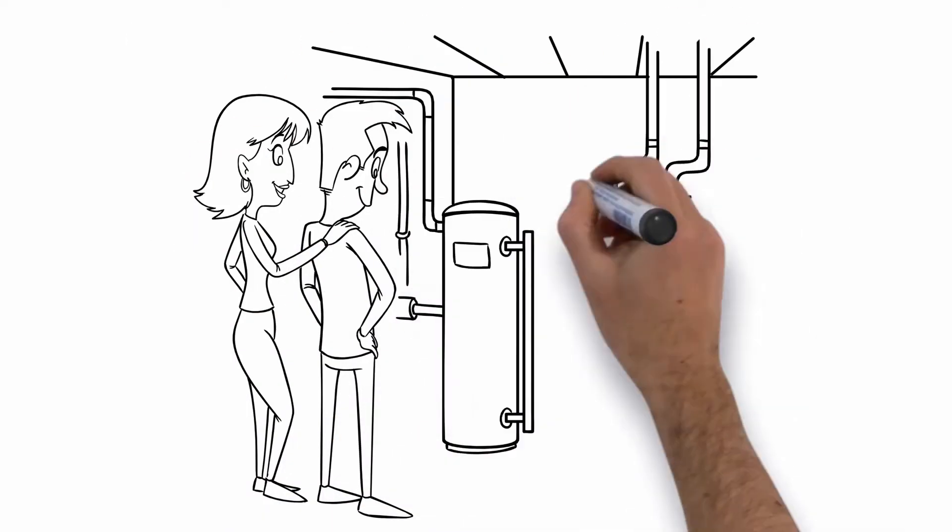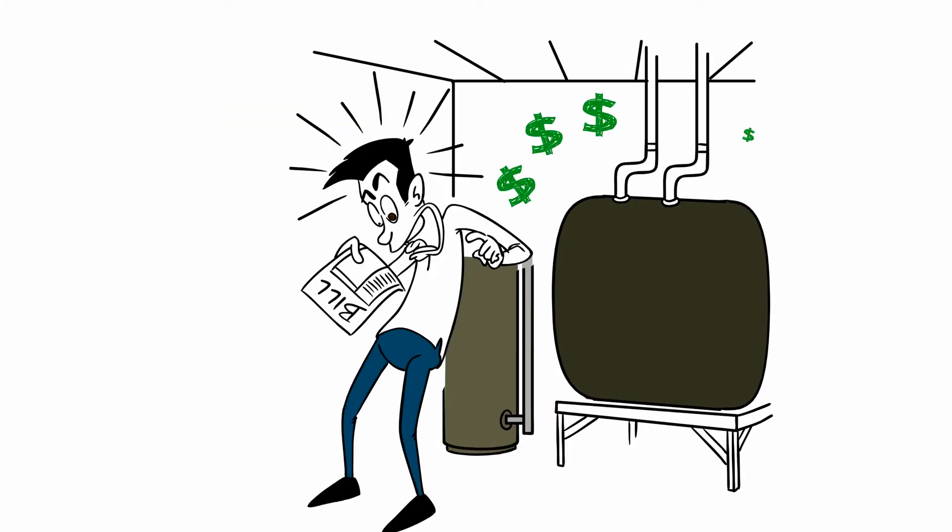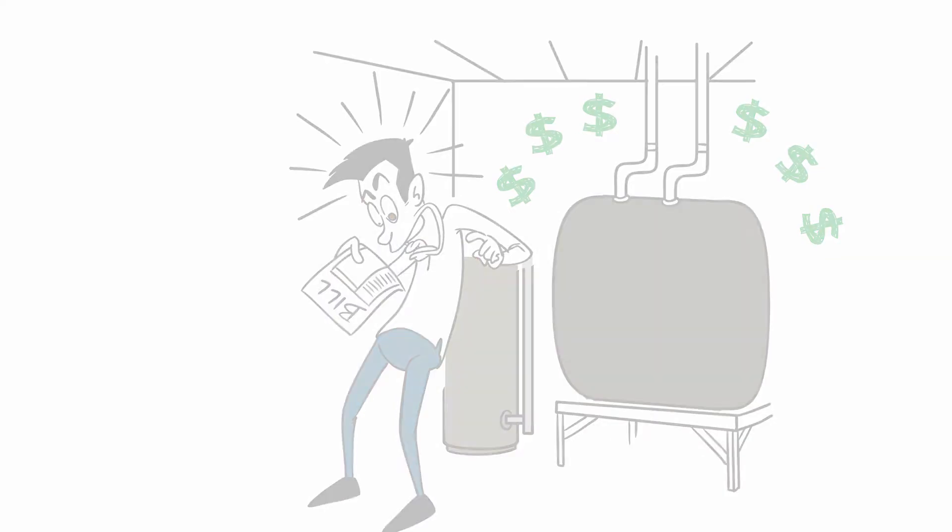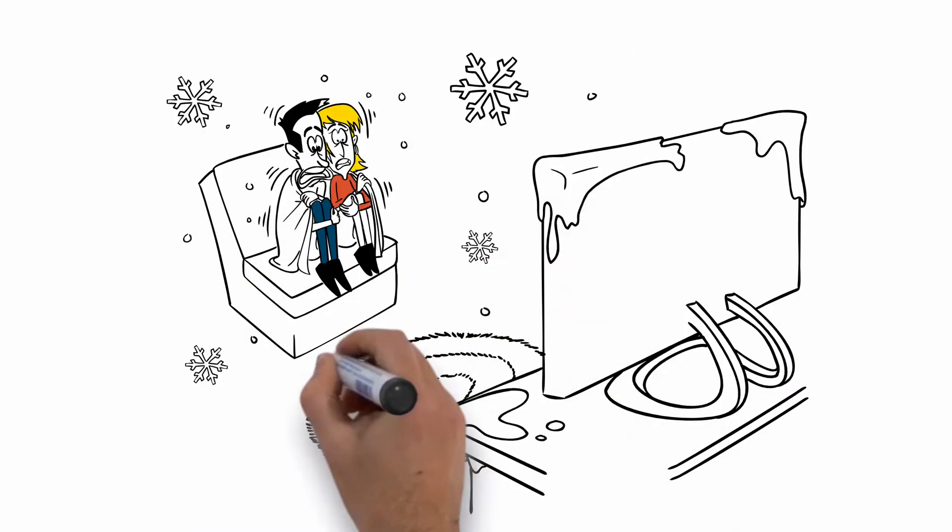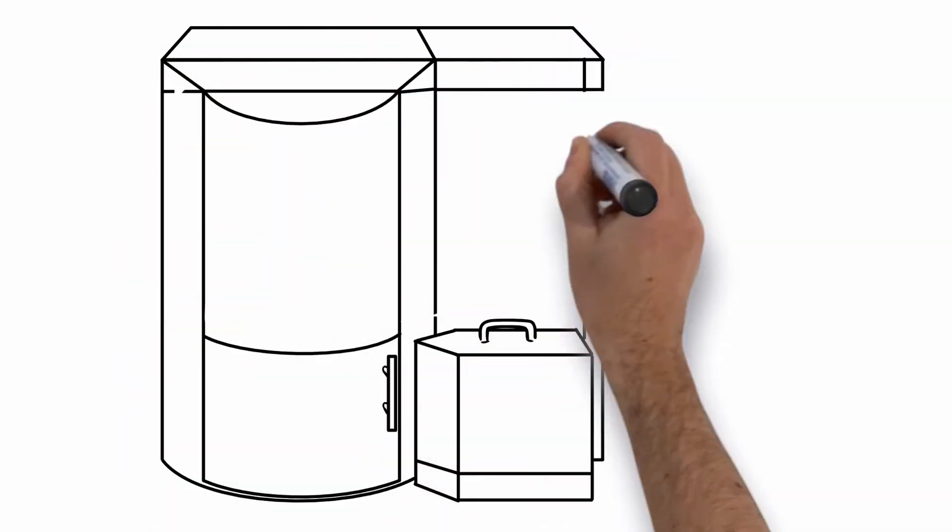Oil and propane costs have risen dramatically over the past few years, which means you're spending hundreds or even thousands of dollars more on heating each winter. The solution isn't to sit in your home freezing under a blanket. The solution is the Mises Auto Pellet Boiler.